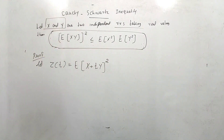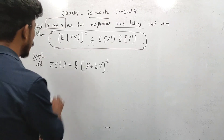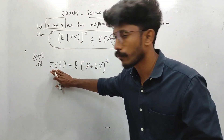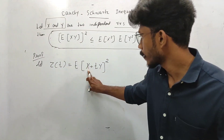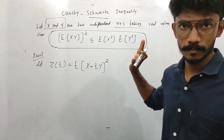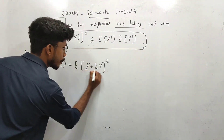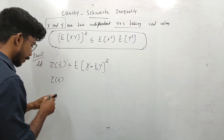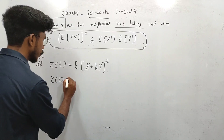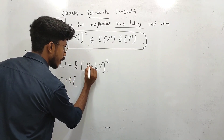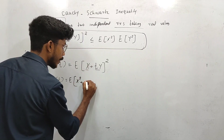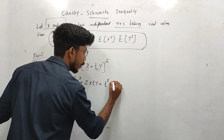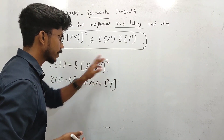The expectation of X plus t into Y the whole square. If we consider this as a plus b the whole square expansion, then Z of t becomes the expansion: expectation of X square plus 2 into X into tY plus t square Y square.